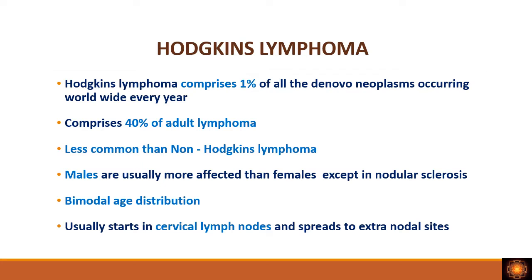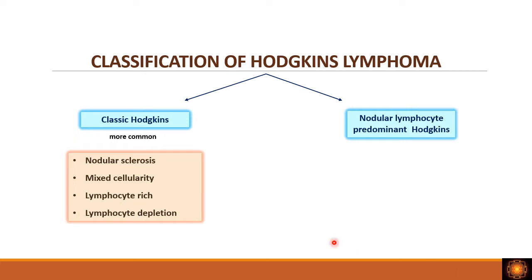The types of Hodgkin's lymphoma are classified into classic Hodgkin's lymphoma and nodular lymphocyte predominant Hodgkin's lymphoma. The basis for this classification is immunophenotyping of the Reed-Sternberg cells. In classic Hodgkin's lymphoma there are four subtypes: nodular sclerosis, mixed cellularity, lymphocyte rich, and lymphocyte depletion. The RS cells in all four classic subtypes share the same immunophenotype, whereas RS cells in nodular lymphocyte predominant type have a different immunophenotype.